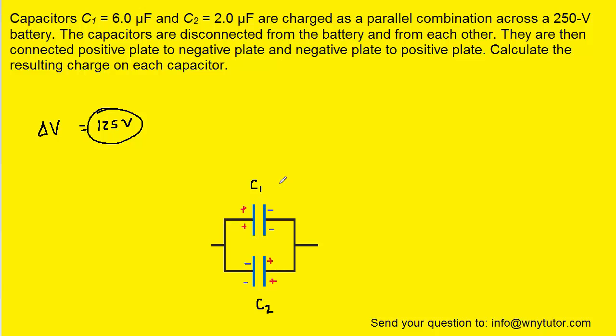Now again, since the capacitors are in parallel, that means that capacitor one has a potential difference of 125 volts, and capacitor two also has a potential difference of 125 volts, because parallel capacitors experience the same potential difference. So now that we have the potential difference as well as the capacitance for each capacitor, we can calculate the charge present on each capacitor.